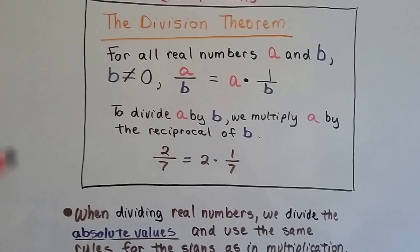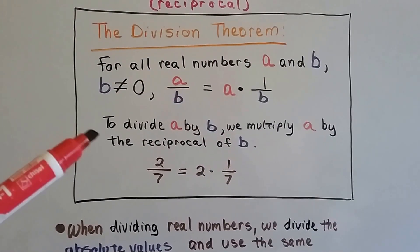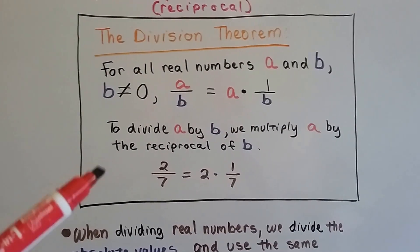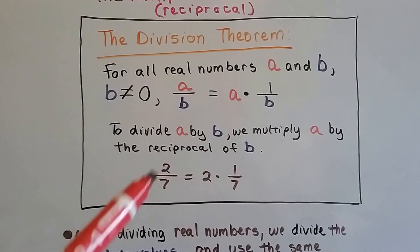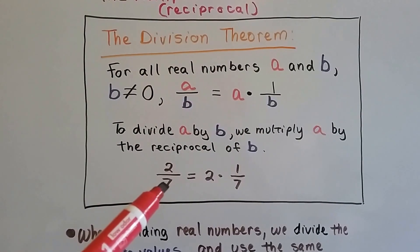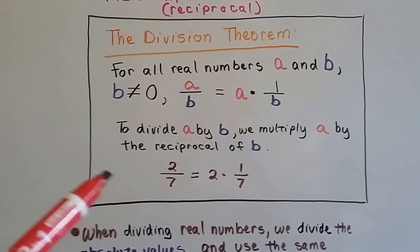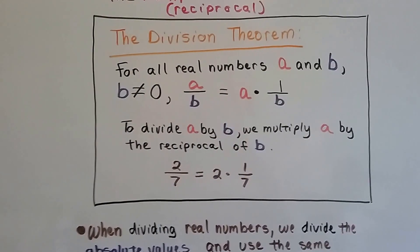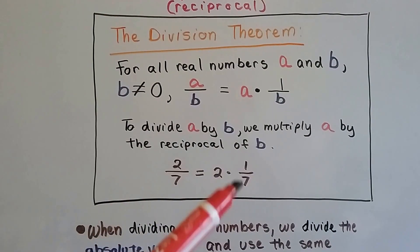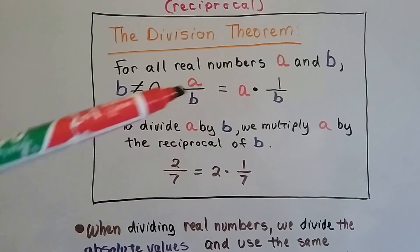To divide a by b, we multiply a by the reciprocal of b. So if b were a 7, that could be 7 over 1. If it was just a regular number, we would flip that around to 1 7th. That's all they're saying.